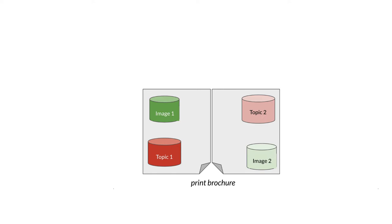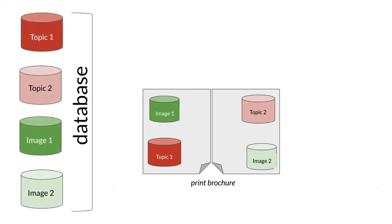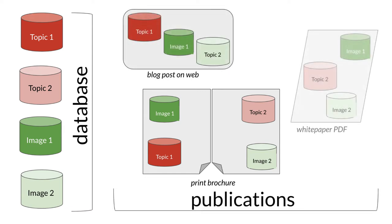A topic is a chunk of text — it could be a paragraph or several paragraphs. For Quercus, one topic might be a paragraph describing the benefits of using the product. So if Fagor stores all their topics and images in a database, they can reuse those topic files in a blog post about Quercus on their website, and reuse one topic and two images in a white paper produced as a PDF in 10 different languages. The exact translated content would appear in all of these publications.